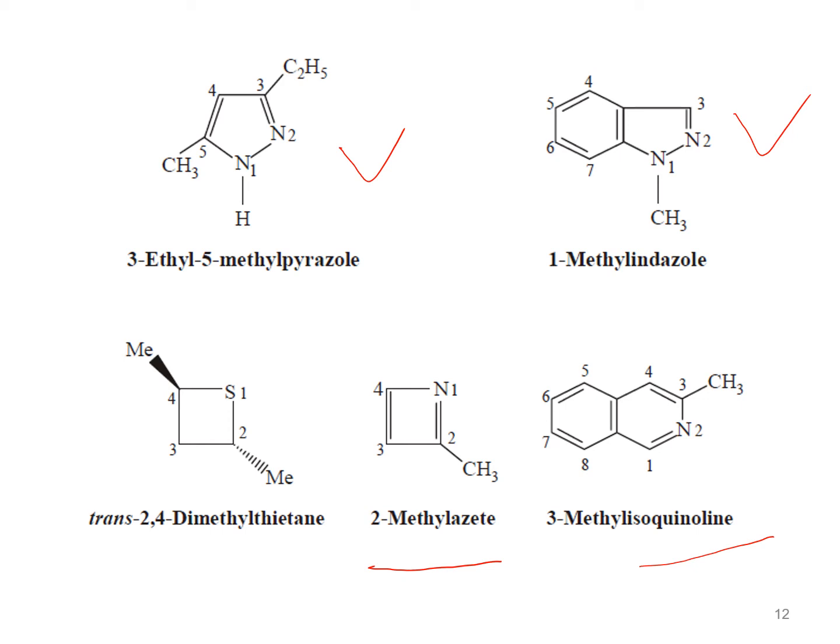This structure is a derivative of thietane, which was also named by the Hantzsch-Widman system. In thietane there are two methyl groups — one at position two and another at position four — so we can name it 2,4-dimethylthietane.